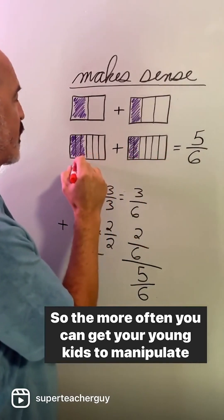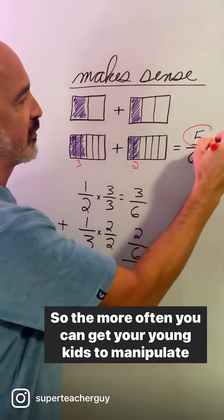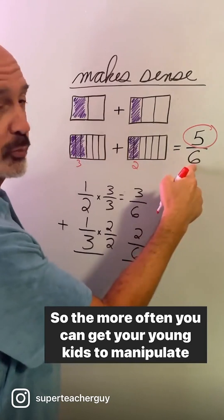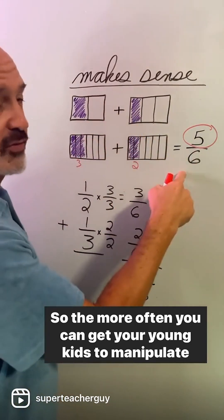You can see here there are three parts here and two parts here. That gives you five parts out of six total parts. One half plus one third is five sixths.